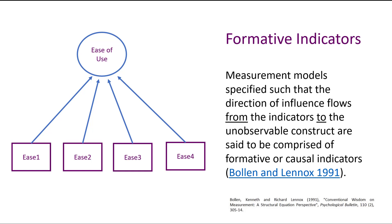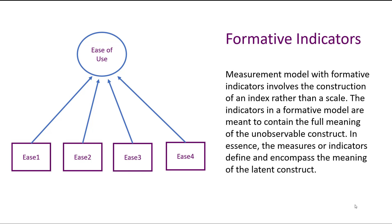With formative indicators, the path from the indicators to the unobservable runs in the opposite direction — the influence flows from the indicators to the unobservable construct. Sometimes these are called causal indicators, though that's somewhat of a misnomer. The term formative indicator is more appropriate. In essence, these indicators are specifying the unobservable — it's more of an index or summative index rather than a scale, as in reflective indicators.